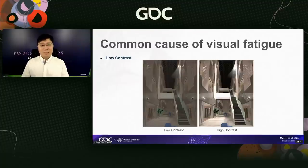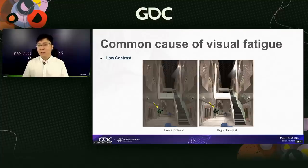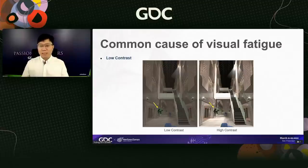The second common cause of visual fatigue is low contrast. In a very low contrast condition, it is very difficult to see and find useful information in the scene. For example, a scene with adequate contrast is much easier to read than one with lower contrast. With too low contrast, players will squint and have a hard time playing the game, which leads to faster visual fatigue.